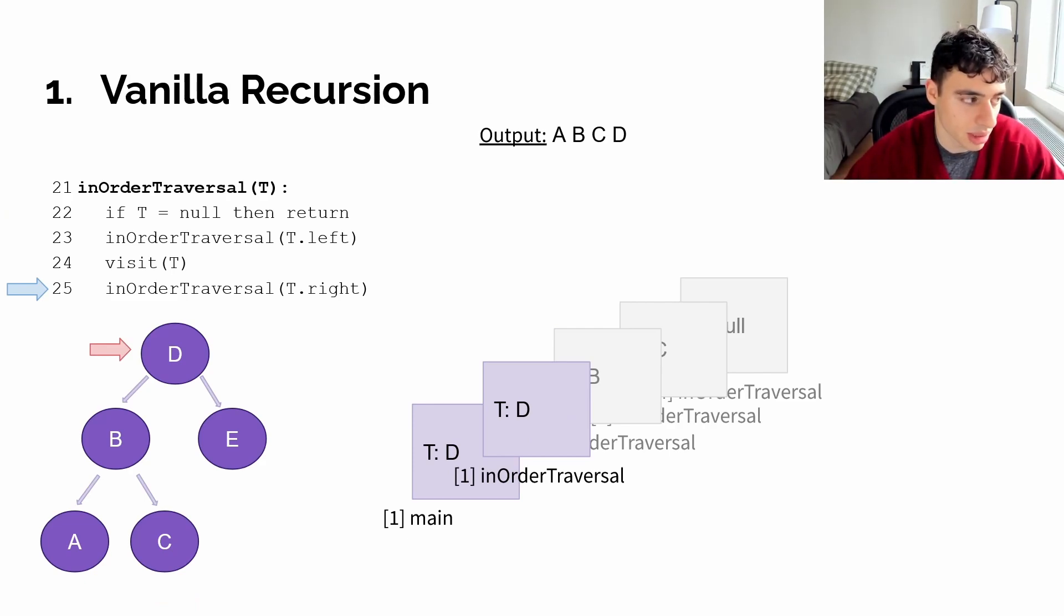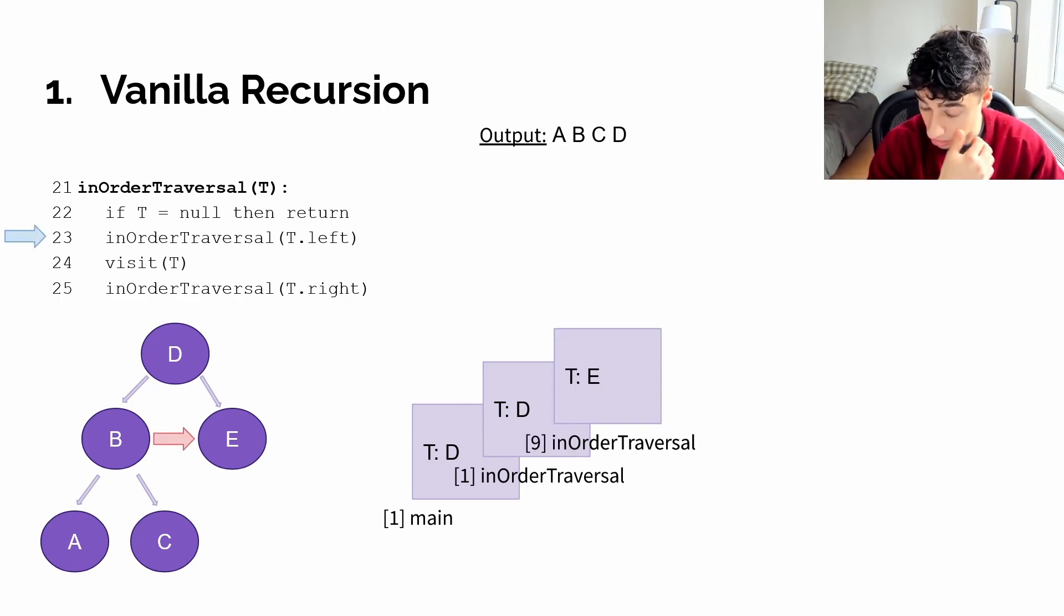Now, our first frame, which was paused at line 23, will now resume, visiting D, adding it to our output, and then running until line 25, in which case it will add a call to T right to the call stack. This will be our 9th frame in this traversal.